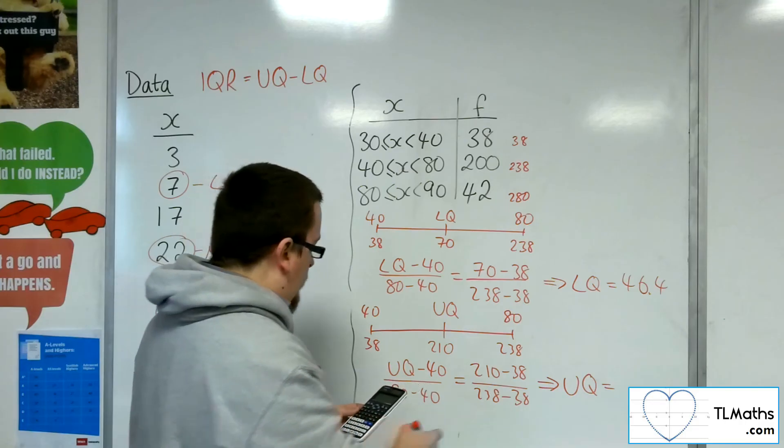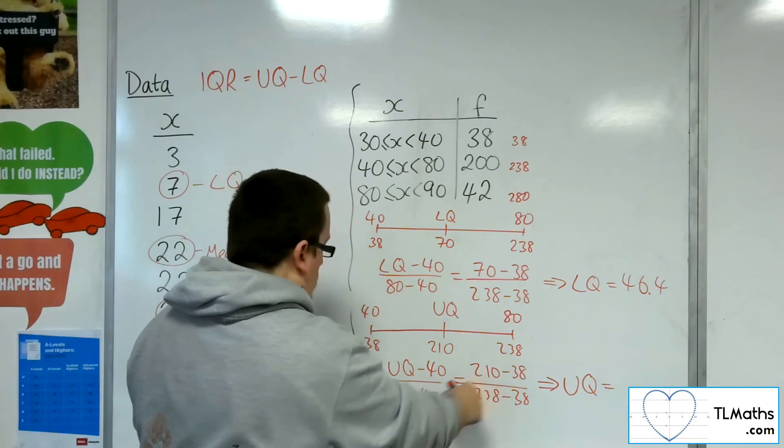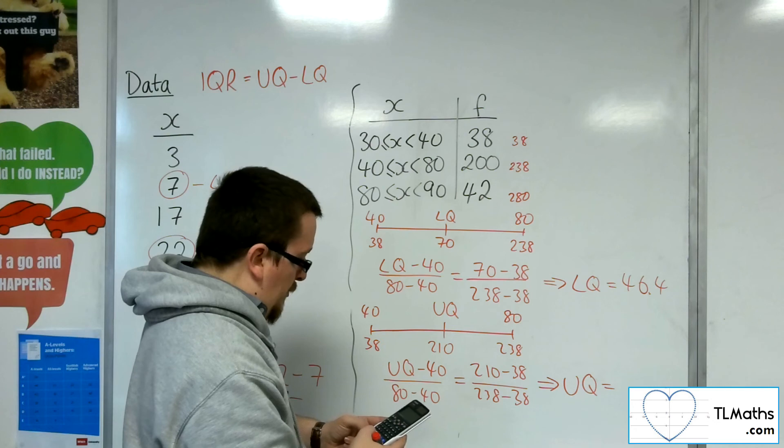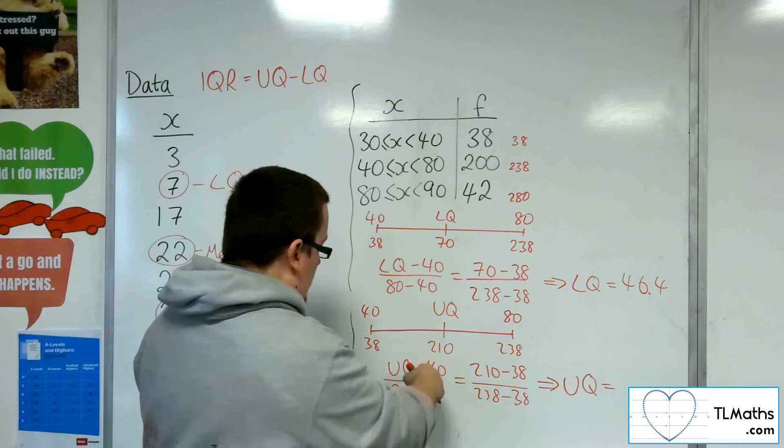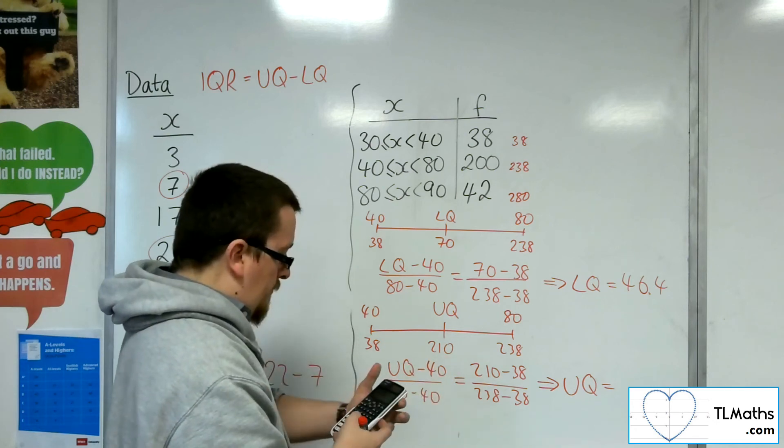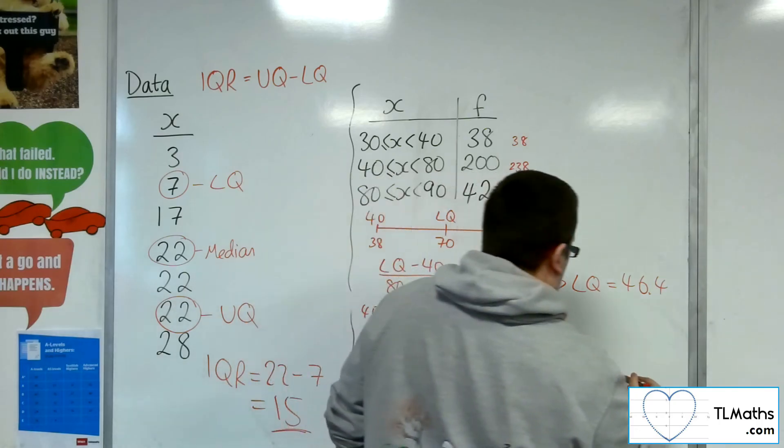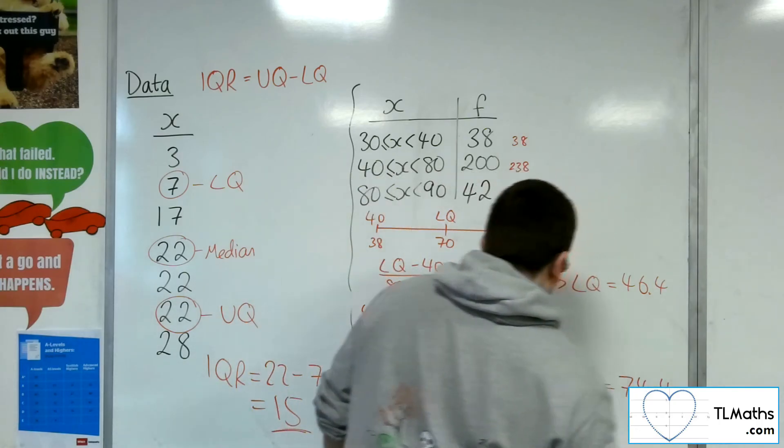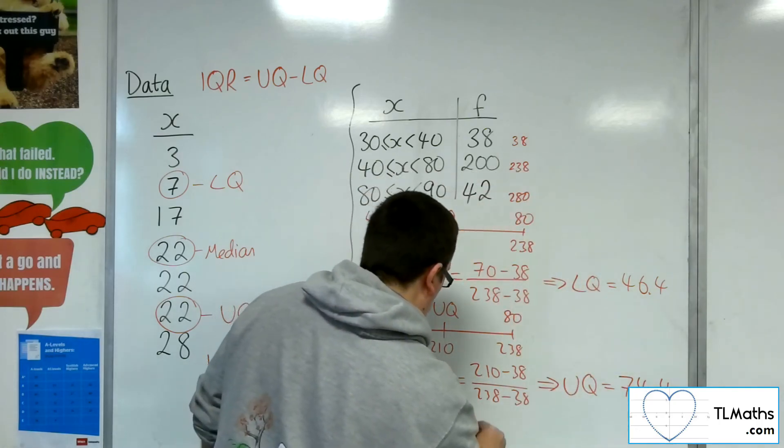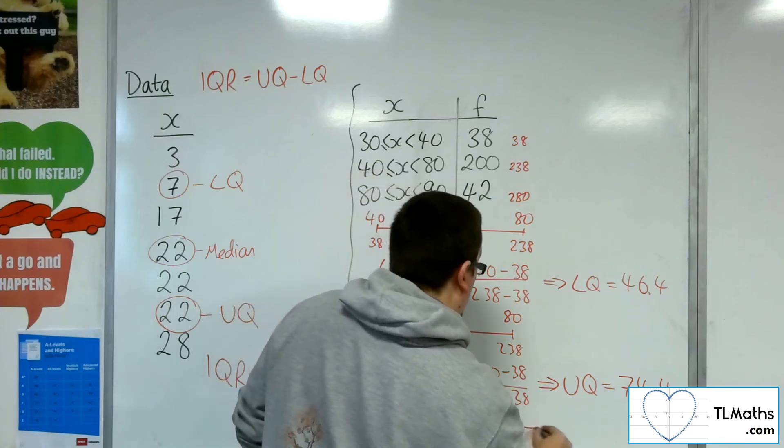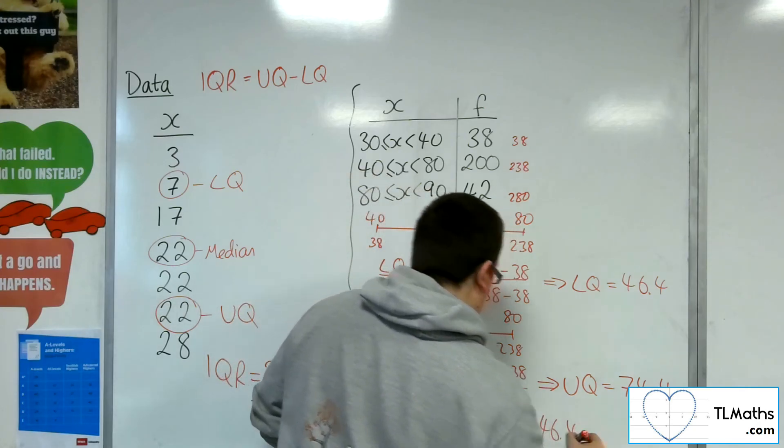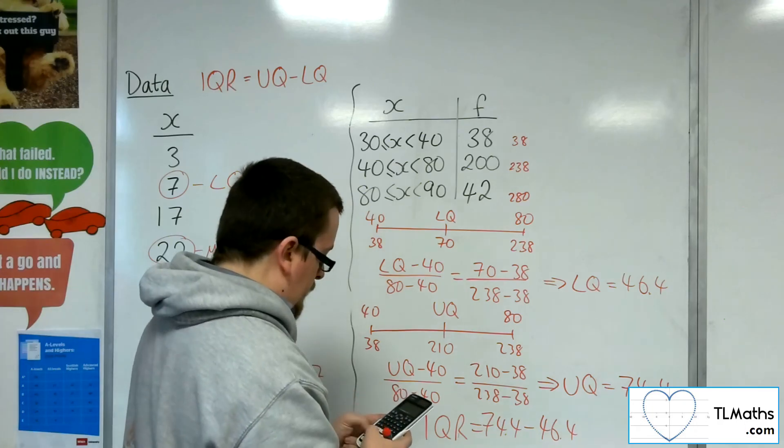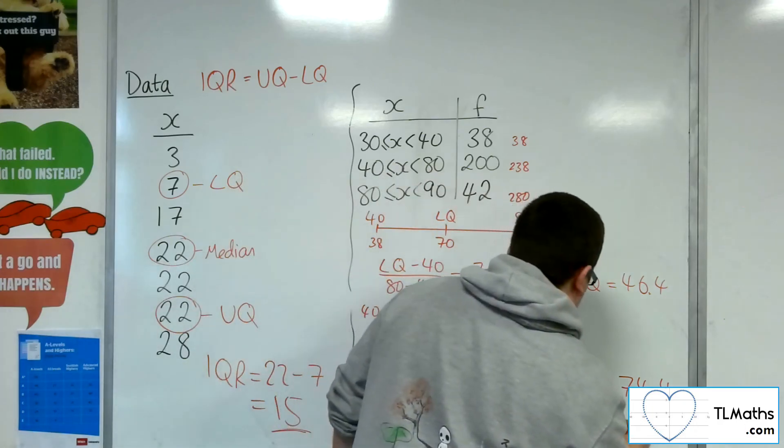So that's 43 over 50, multiply up by the 80 take away 40, and then add 40 to both sides. And that gets us 74.4. And so the interquartile range is 74.4 take away 46.4, and so that's 28.